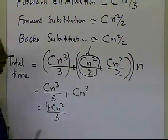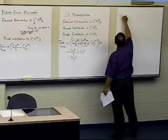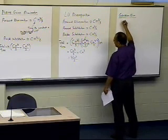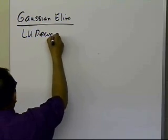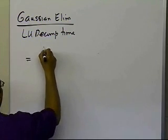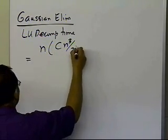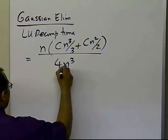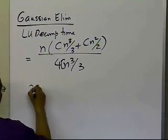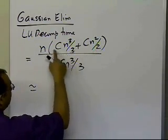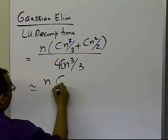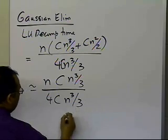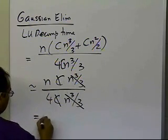If I look at the ratio of Gaussian elimination time divided by LU decomposition time: the Gaussian time is n times (cn³/3 plus cn²/2), and the LU decomposition time is 4cn³/3. For large n, the cn²/2 term becomes small compared to cn³/3, so I can approximate the numerator as cn⁴/3. Dividing by 4cn³/3, the c's and n³ terms cancel, giving approximately n divided by 4.